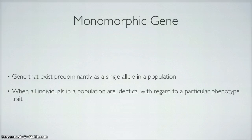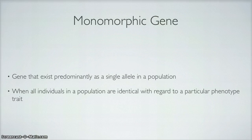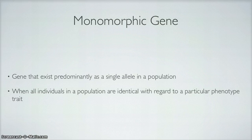I also have to talk about monomorphic. It is a gene that exists predominantly as a single allele in a population. Back to the example of the two flowers — they could either be all red or all yellow if the color was only monomorphic. It is when individuals in a population are identical with regard to a particular phenotype trait.